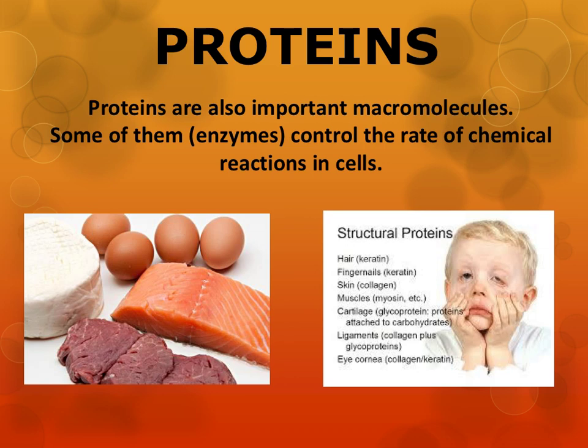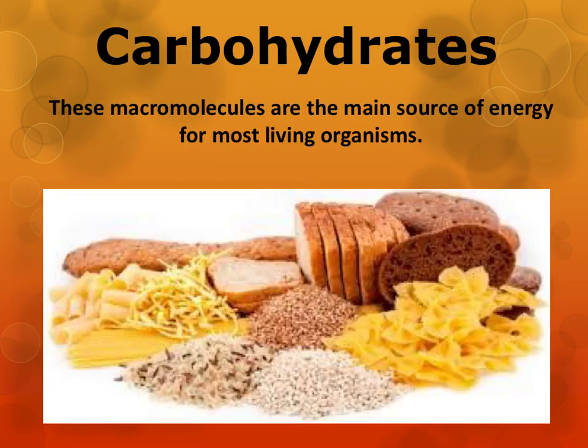The job of enzymes is to speed up chemical reactions in our cells. But other proteins are important in the formation of muscles, cell membranes, and skin. Proteins are commonly found in foods such as meats and dairy products. Carbohydrates are also a diverse group. They're considered the main source of energy for most living organisms. Carbs are commonly found in grain-based foods such as breads and pastas, but they're also found in sweets such as cookies and candy.